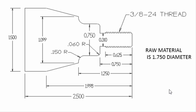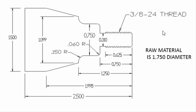Before we go into the program, I want to take a quick look at the print that we used. We had 50 thousandths to face off, so we're going to take 20 thousandths passes leaving 5 thousandths for a finish pass. Then we're going to rough the OD, taking 100 thousandths per pass, leaving 30 thousandths for a finish pass. Then we're going to finish the face, finish the OD, come back and groove the thread relief, and then finish with threading the 3/4-24 thread.